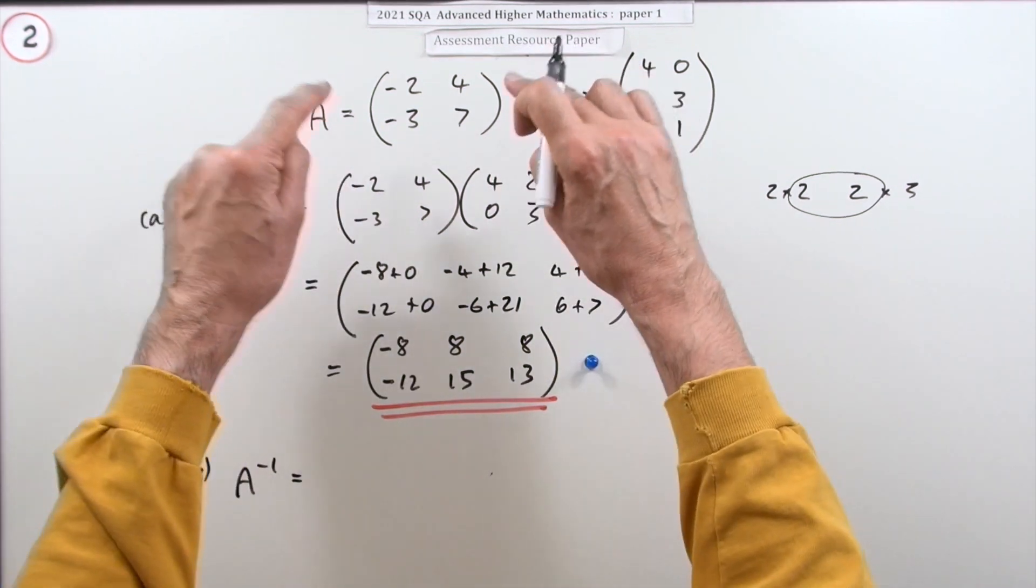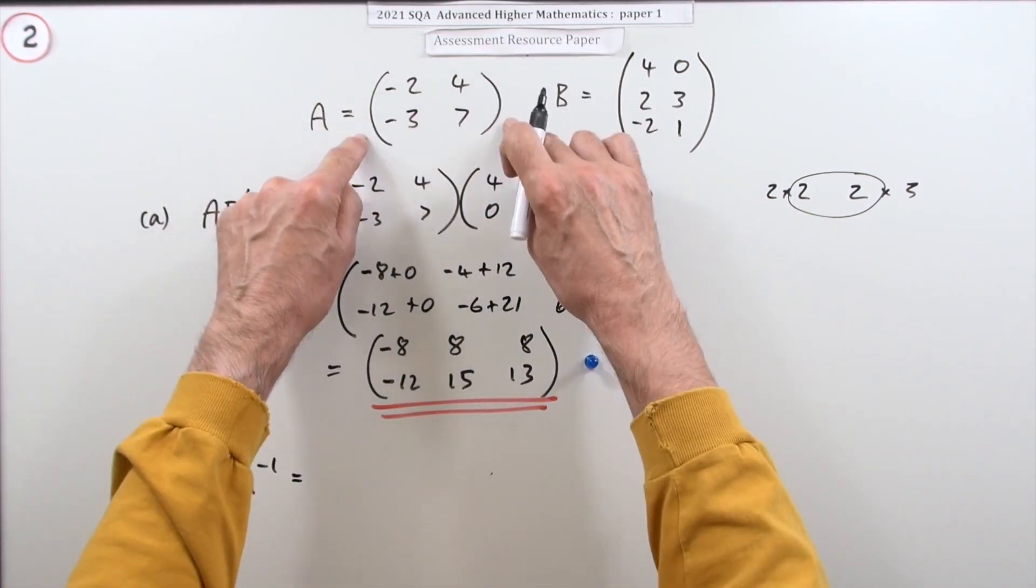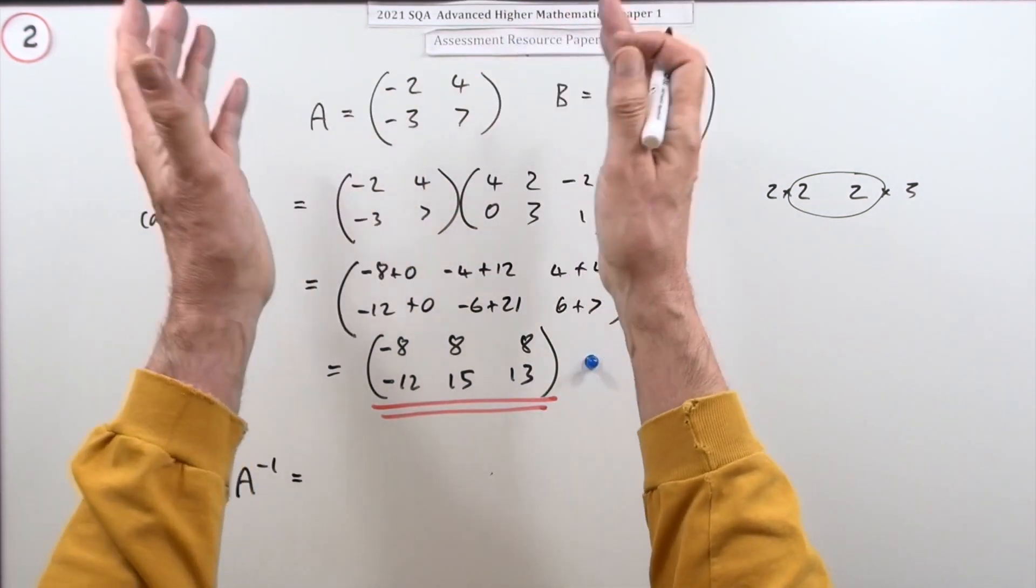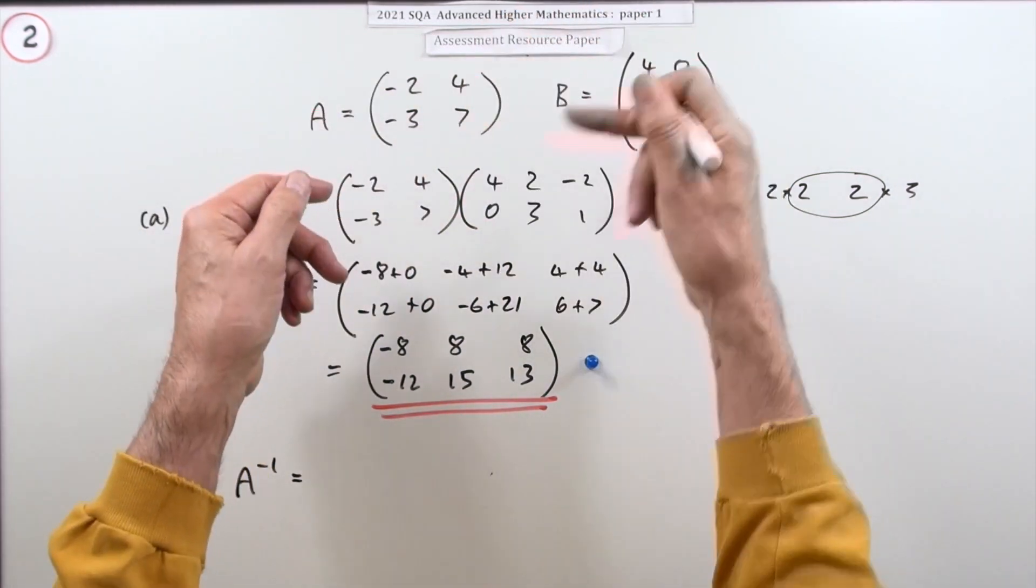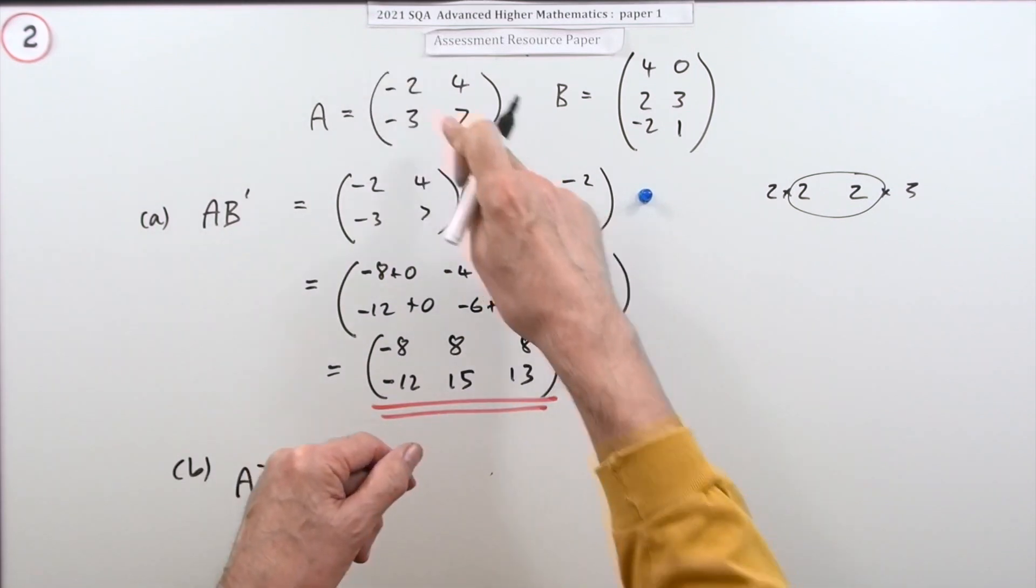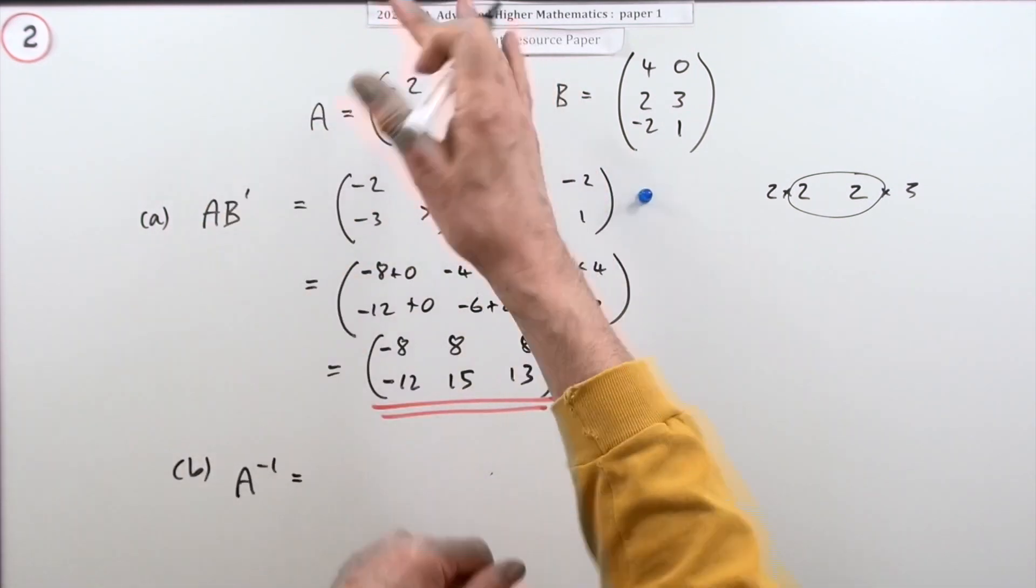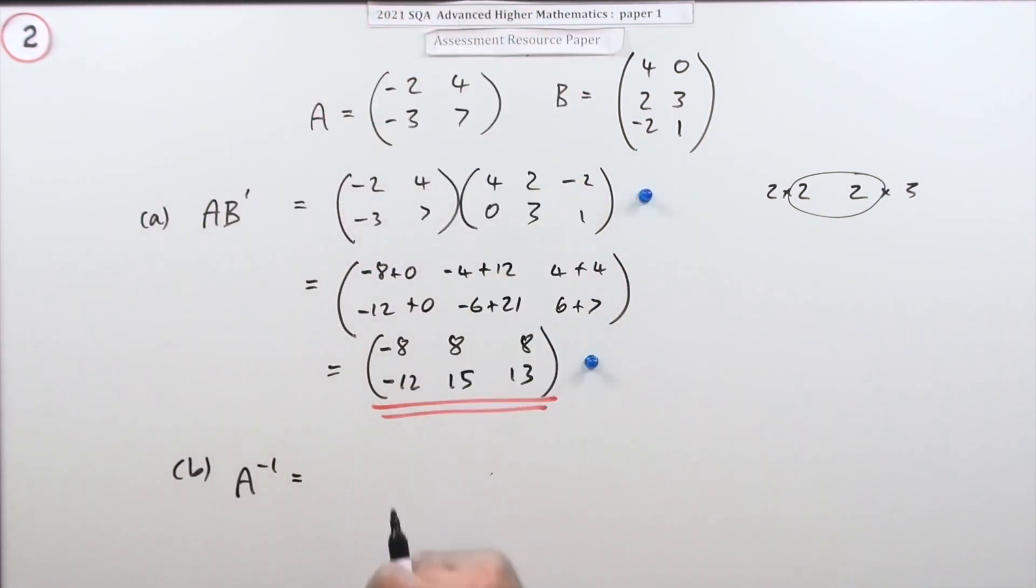Without going into details, what you have to do to get the inverse of—and it has to be a square matrix—is you transpose it first of all. Transposing it in the case of a square matrix just means flipping it all around the main diagonal.